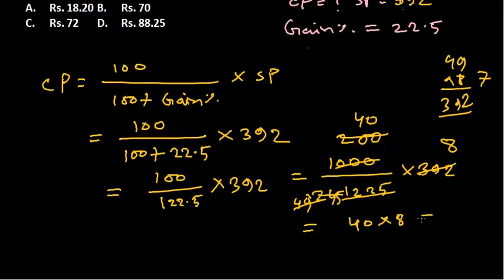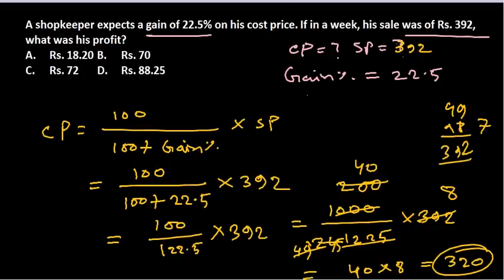So 320 is the new value, the value of the cost price. Cost price is 320, and the selling price is provided as 392.